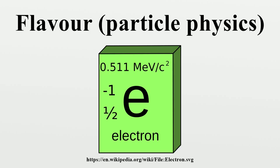Antiparticles and hadrons: flavor quantum numbers are additive. Hence antiparticles have flavor equal in magnitude to the particle but opposite in sign. Hadrons inherit their flavor quantum numbers from their valence quarks. This is the basis of the classification in the quark model. The relations between the hypercharge, electric charge, and other flavor quantum numbers hold for hadrons as well as quarks.